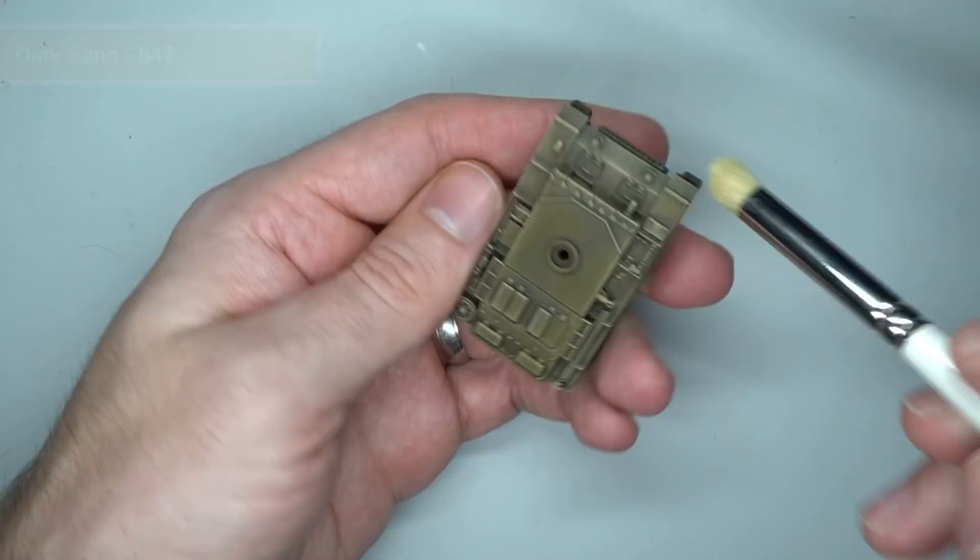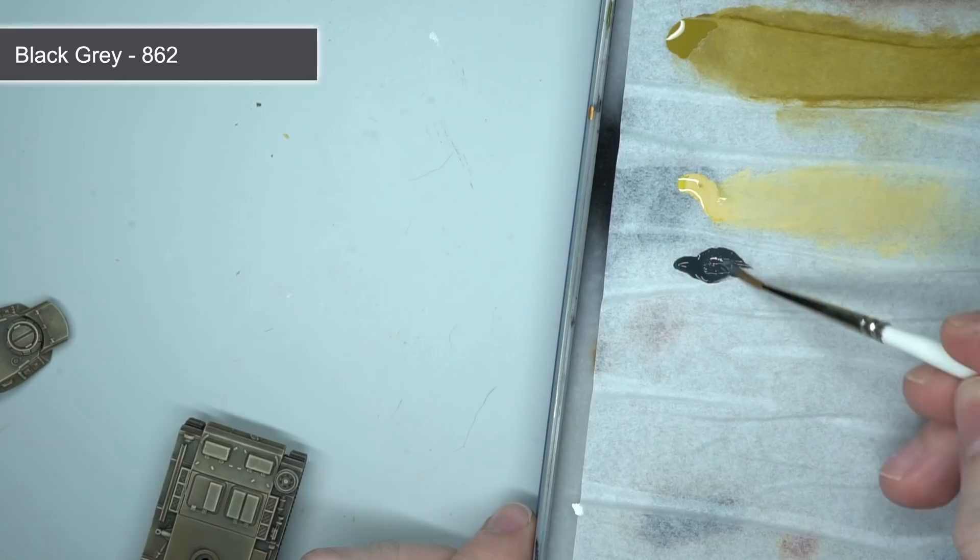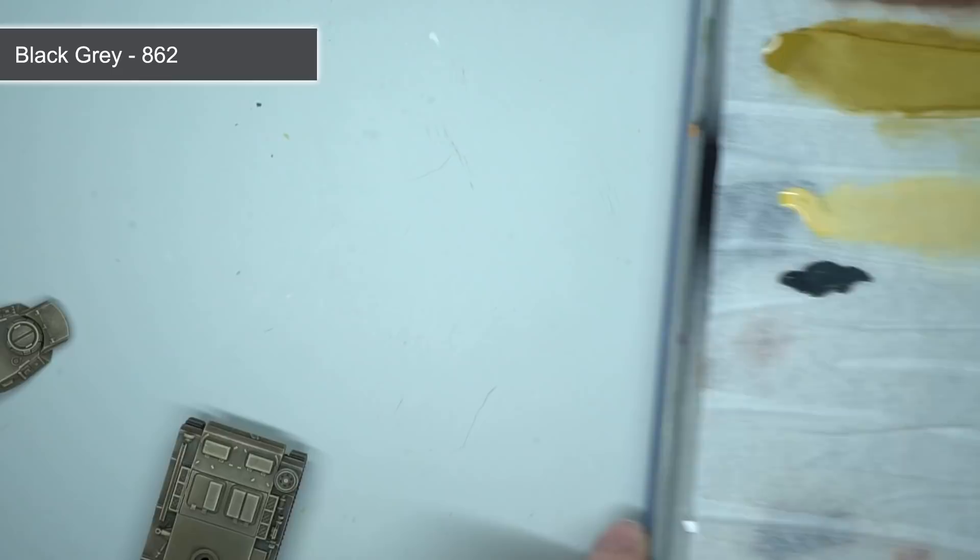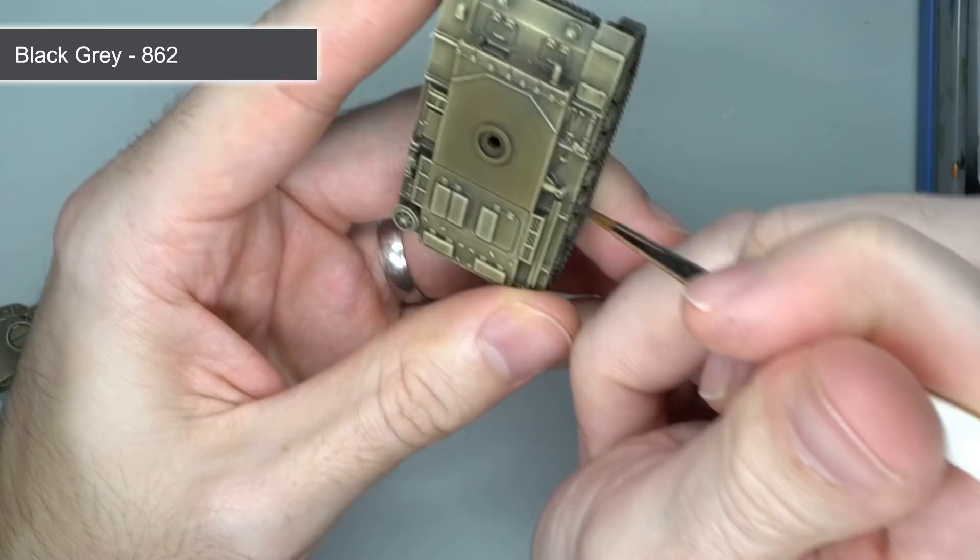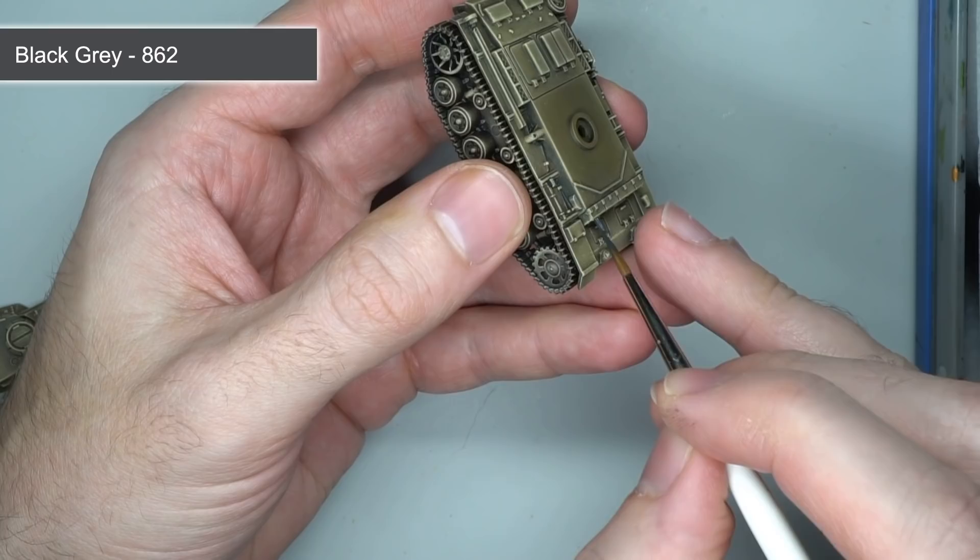With the base color of the armor completed, I could move to painting details such as the tools and rubber trim of the road wheels. For these areas, I applied a base coat of black-grey, mixed with a little water to help it flow smoothly. This dark paint enhanced the visibility of these details by helping them stand out against the desert color of the armor.